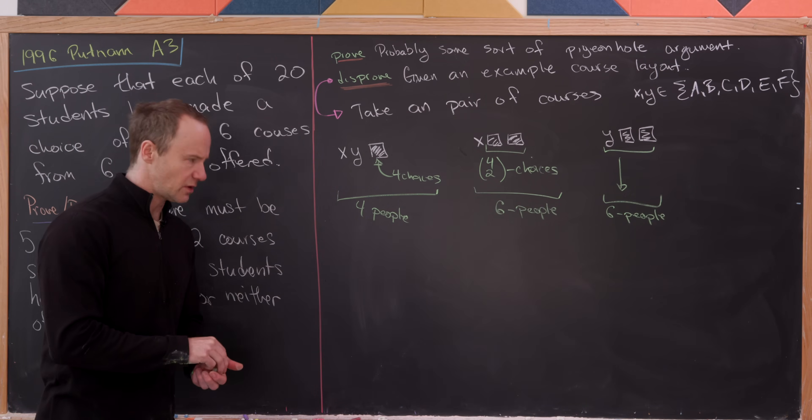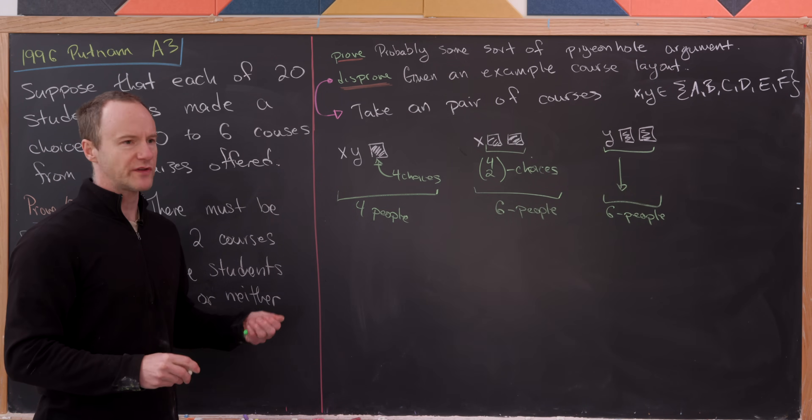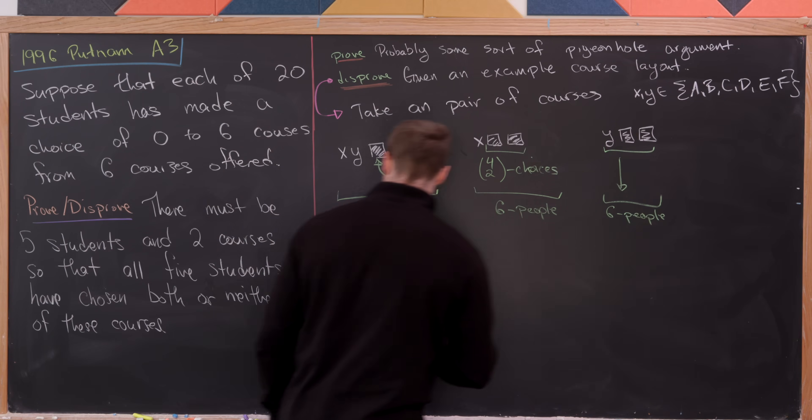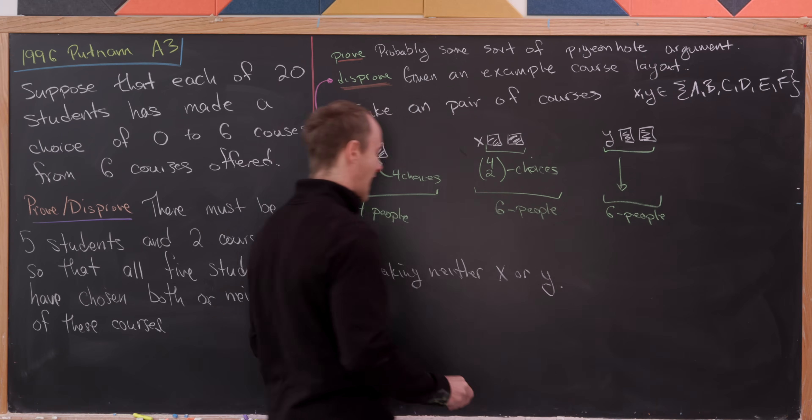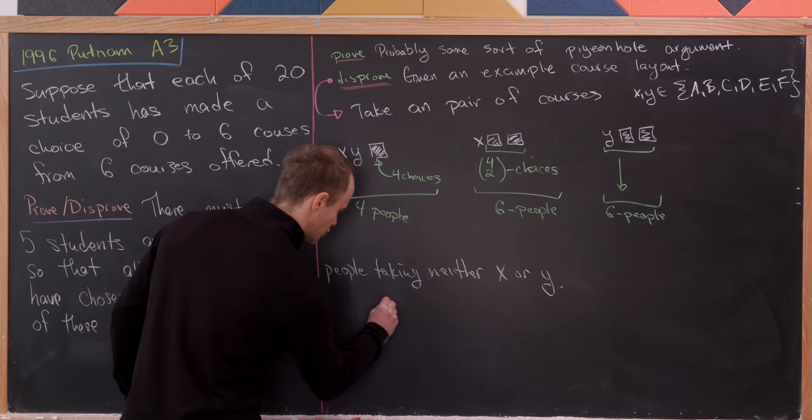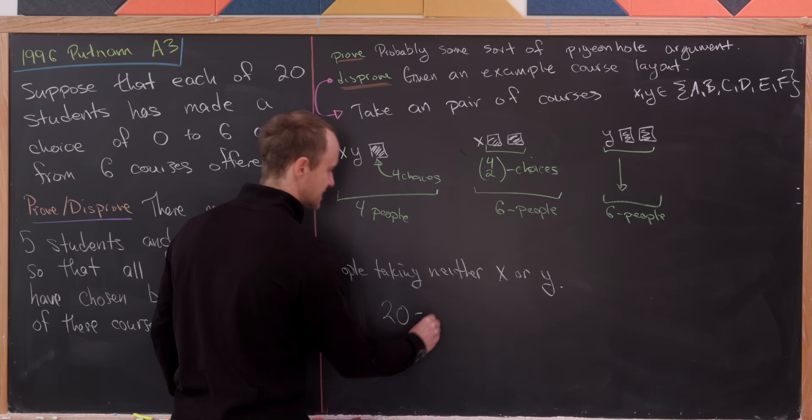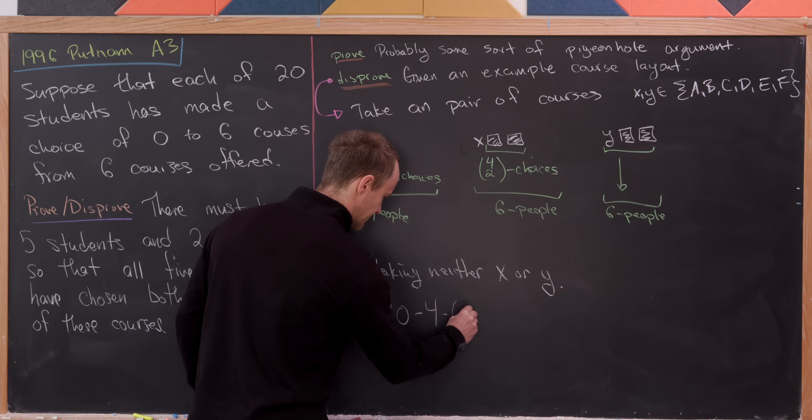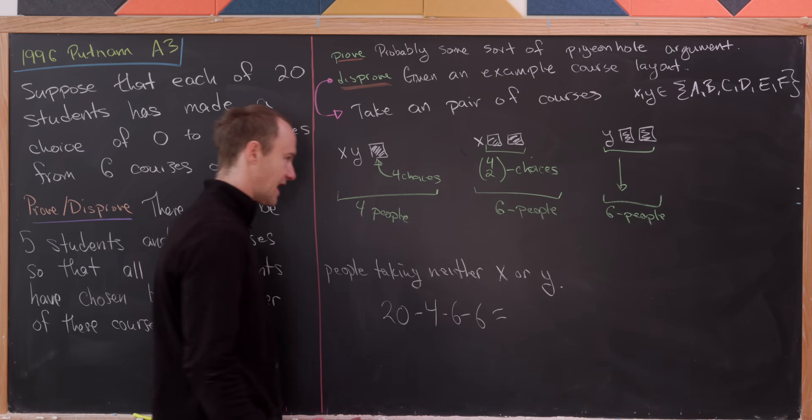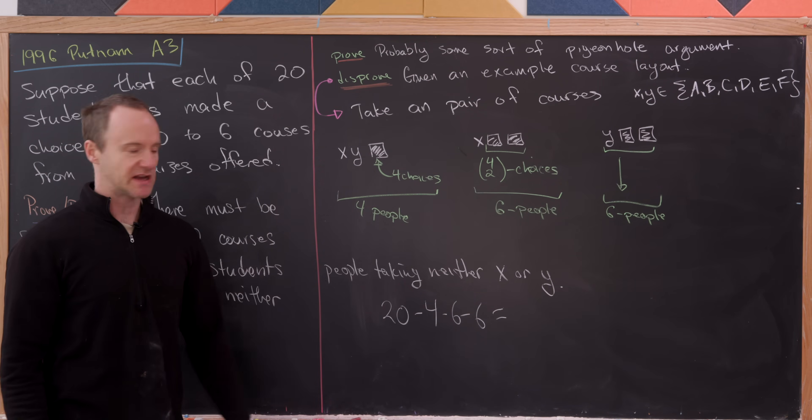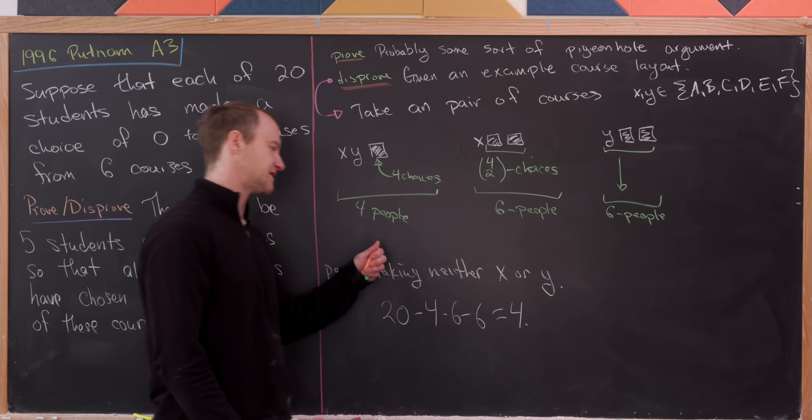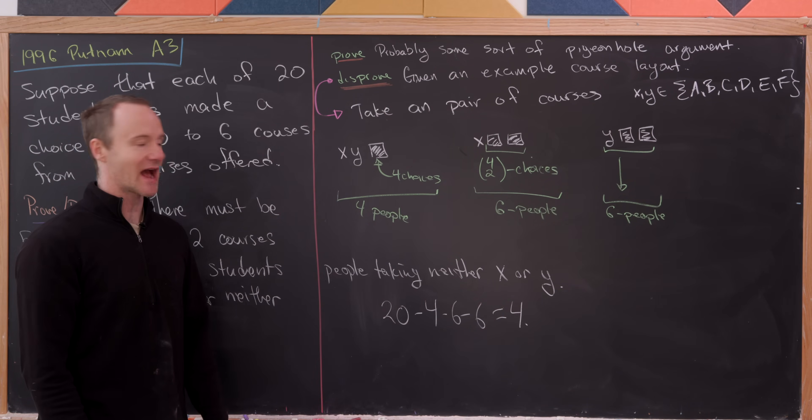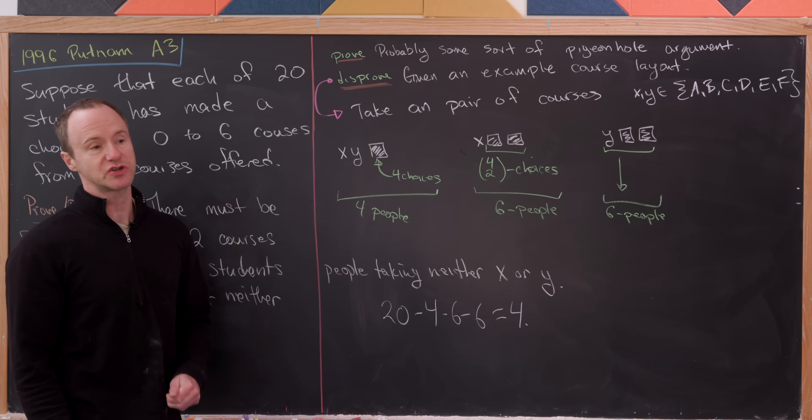But now notice that that leaves only one possibility left. And that possibility left is people neither X nor Y. But notice there are 20 total students, and now we can subtract four, and then we can subtract six and six again, just clearing out all of those possibilities up there. And we get the number four. So that means there are four people taking neither X nor Y.